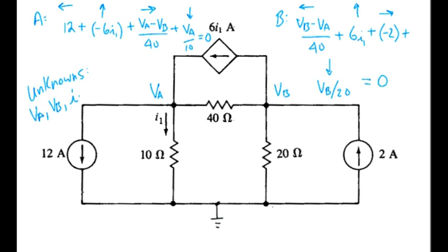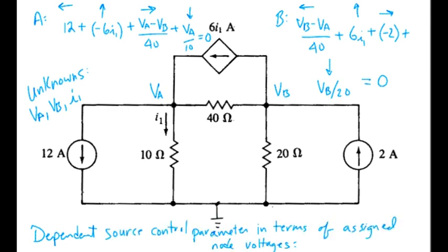And we also have I1 sitting in the equation. So we need our dependent source equation. Let's save a little time and write the whole thing out. The dependent source control parameter needs to be written out in terms of the assigned node voltages.